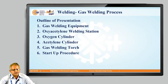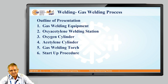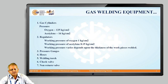Welcome to this third session on gas welding process. In this session we are going to understand the gas welding equipment details so that we can easily carry out the process as prescribed. Gas welding is mainly oxy-acetylene welding, and the various equipments used in the oxy-acetylene welding station include oxygen cylinder, acetylene cylinder, hoses for supply of oxygen and acetylene gas, regulators to control the pressure, welding tools, and a standard systematic startup procedure.